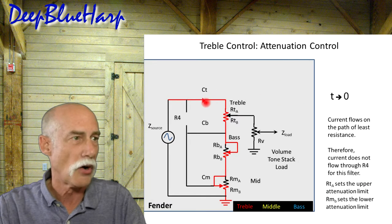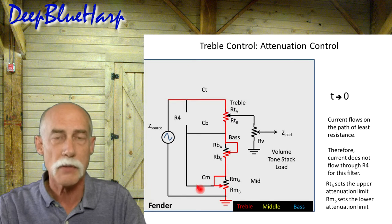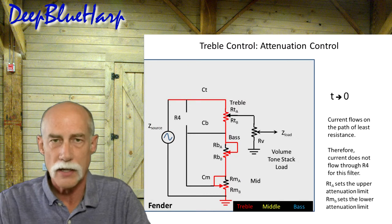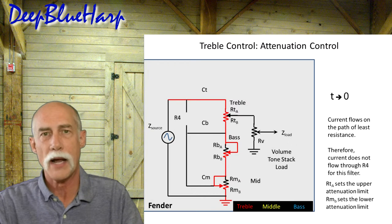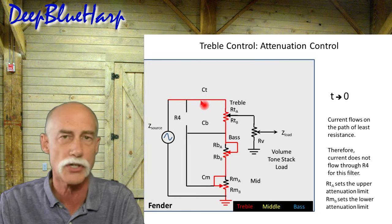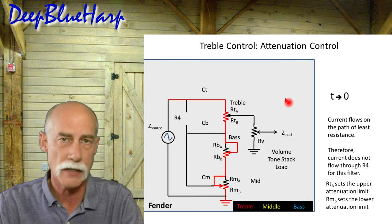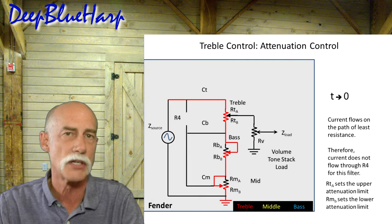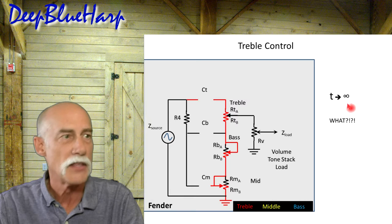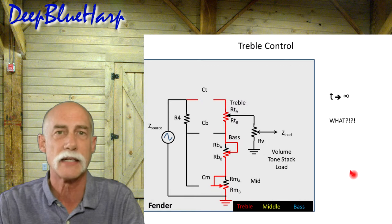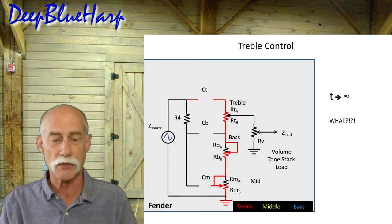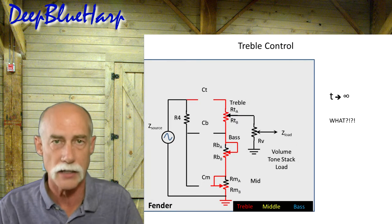At T0, all capacitors are shorted out and because current goes through the path of least resistance, R4 is effectively ignored — whether it's 100,000 ohms or whatever, it's infinitely harder to pass current through that resistor than through a short piece of wire. At this point we've identified the attenuation controls — the resistors that form the attenuation control for the tone stack. When we go to time infinity, the capacitors open up and essentially everything is disconnected. But limiting ourselves to whether a capacitor is shorted or open is not enough to analyze a tone stack.